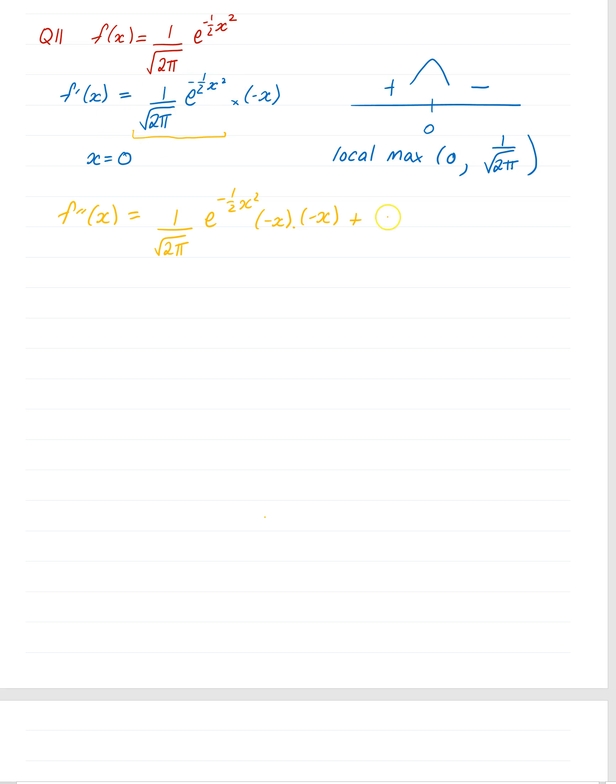we write the first function down, 1 over square root 2π e to the minus a half x squared times the derivative of the second function, which is negative 1.